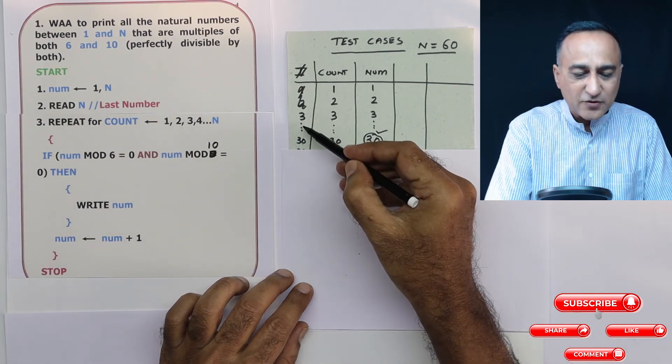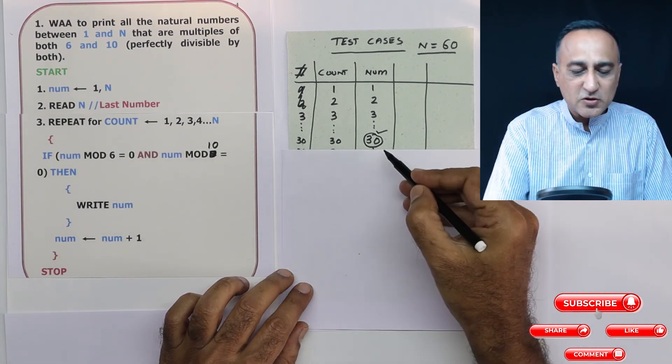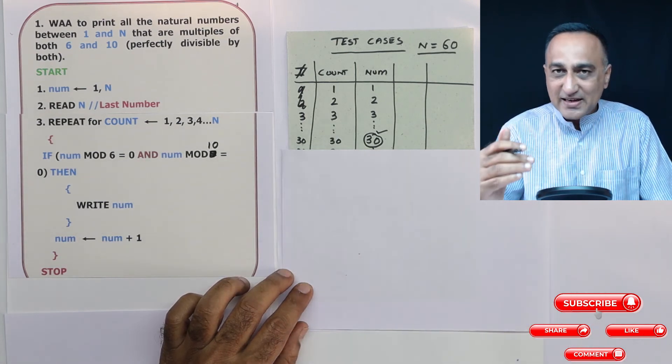So I have not checked after three, four, I have directly come to 30 because I'm sure none of the numbers till 30 is going to be divisible by both 6 and 10.